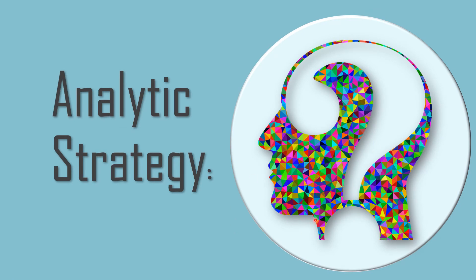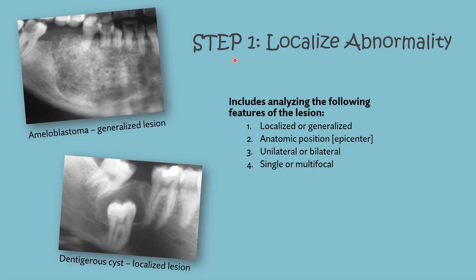Analytic strategy: to analyze various diseases, by looking at features you should understand the disease process — only then can you come to a conclusion. Various steps must be followed to analyze a disease or lesion, including analyzing features such as whether the lesion is localized or generalized, what the epicenter is, the anatomic position, whether it is unilateral or bilateral, and whether it is single or multifocal. Understanding all of this helps determine if the lesion is normal or abnormal, and if abnormal, you proceed with further analysis.